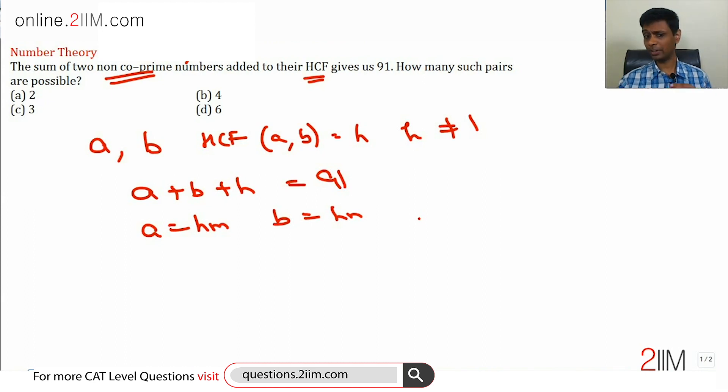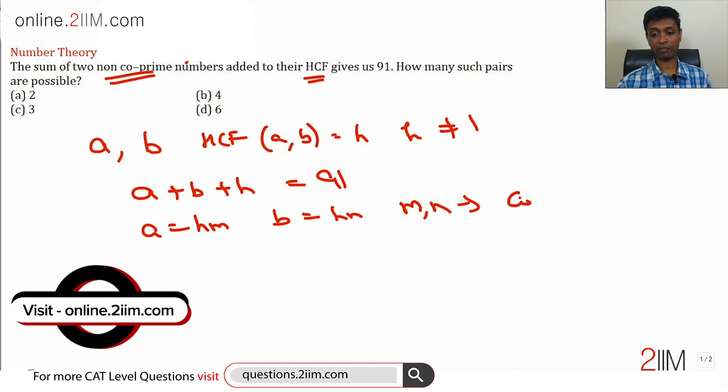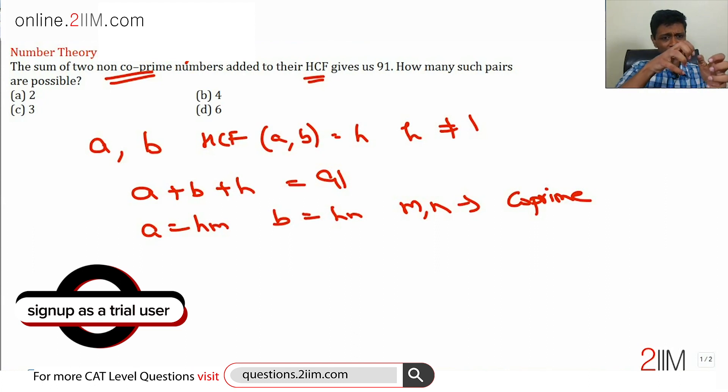But what we have to build in straight away, the moment we write a as h into m, b as h into n, is that m and n have to be coprime. The highest common factor of a and b is h. So I take off h from a and b. What I am left with, those two numbers cannot have anything in common. Think about this. This is a very vital point. This is going to chase us throughout HCF and LCM.